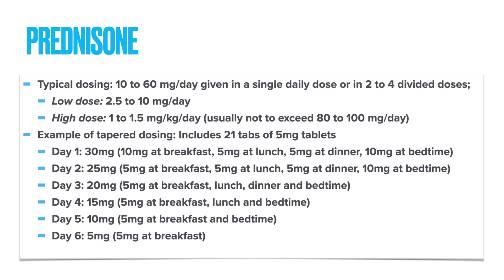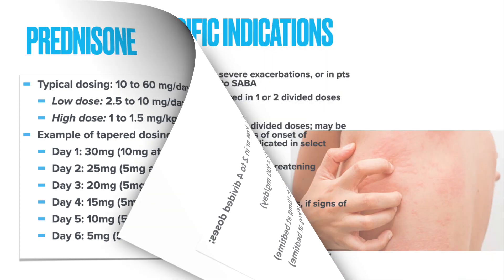An example of a prednisone tapered dose pack is listed here. On day one, they take 30 milligrams — 10 at breakfast, 5 at lunch, 5 at dinner, and 10 at bedtime. And then it's through six days, and you can see how the dose is slowly tapered.